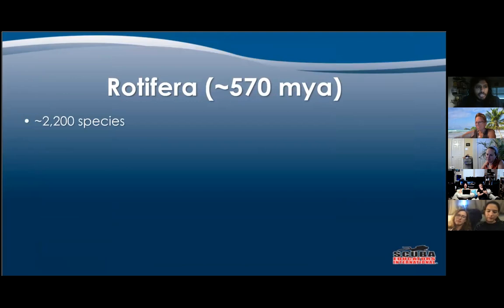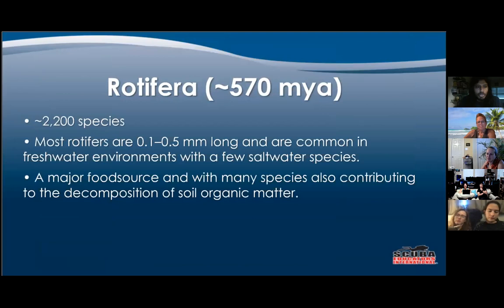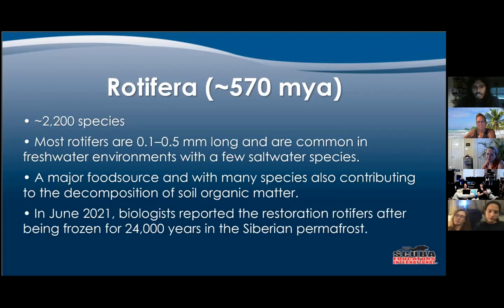Next we have Rotifera — 2,200 species. These are very tiny creatures that live in fresh and salt water. They're a major food source and contribute to the decomposition of soil organic matter. Just last month they revived a 24,000-year-old specimen, which is pretty incredible.